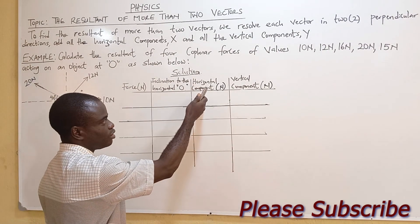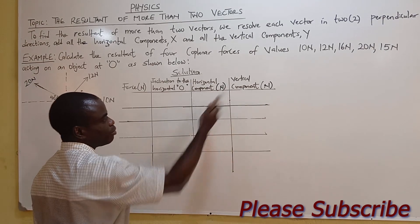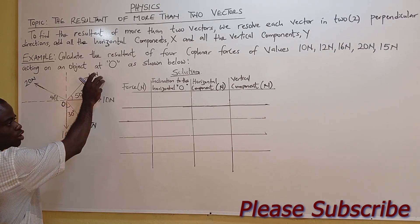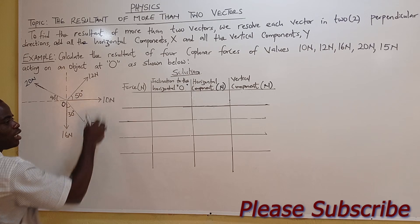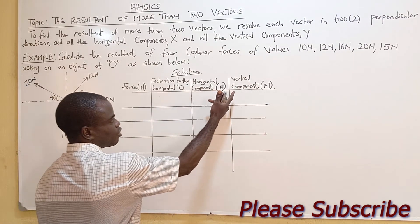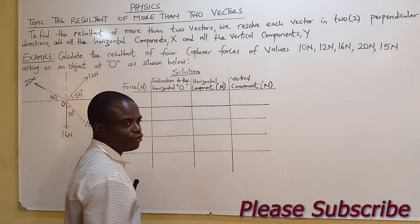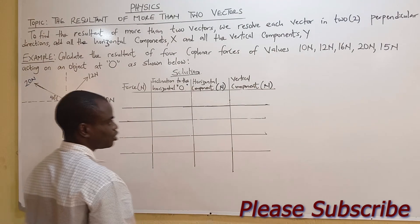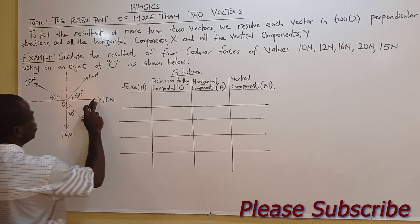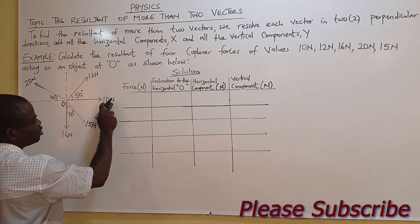You must create a table with columns showing: the force, its inclination to the horizontal, the horizontal component in Newtons, and the vertical component in Newtons. If you are given velocity instead of force, the components will be in units of velocity. In this case we are dealing with force, starting with 10 Newtons lying on the horizontal.